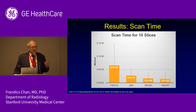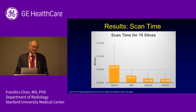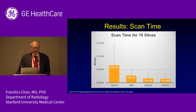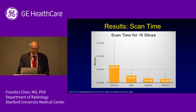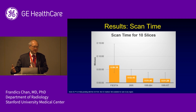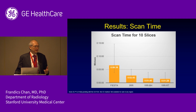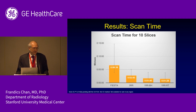Looking at scan times: the traditional FIESTA scan had a median acquisition time of about six minutes, with a range up to 15 minutes depending on patient recovery between breath holds. For 3RR, the strategy is to stack up multiple slices per breath hold — typically four slices — reducing the number of breath holds needed, achieving the full scan under three minutes. For 1RR, typically under one and a half minutes.